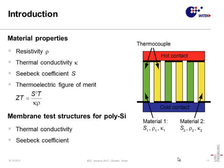All these three parameters are summarized in the thermoelectric figure of merit, ZT. ZT is a measure for the ability of a material to convert energy — the higher ZT is, the more efficiently it can convert energy. For the determination of ZT, the temperature-dependent physical properties have to be determined. For this, we present membrane test structures for the determination of the thermal conductivity and the Seebeck coefficient of doped polysilicon thin films.